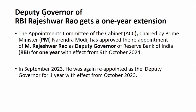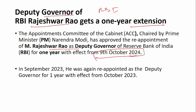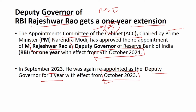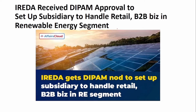Next: M. Rajeshwar Rao, Deputy Governor of the Reserve Bank of India, gets one more year of extension with effect from October 9, 2024. In September 2023, he was reappointed as Deputy Governor for one year from October 2023. This is a second extension for M. Rajeshwar Rao. This has been approved by the Appointment Committee of the Cabinet, chaired by the Prime Minister. Remember: the head of the Appointment Committee of the Cabinet is the Prime Minister, and this committee approves the reappointment of the Deputy Governor.